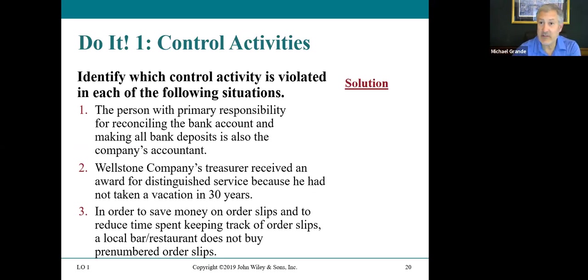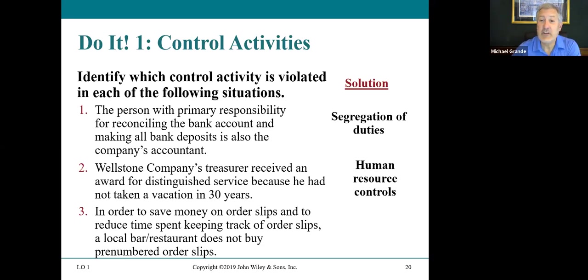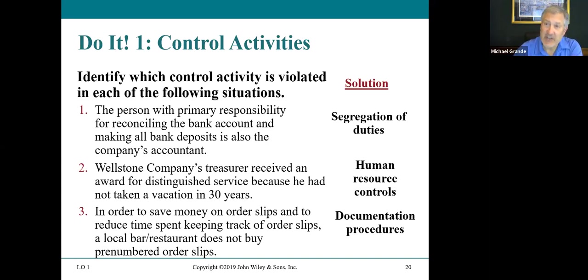Identify which control activity is violated in each situation. First, the person who reconciles a bank account and makes all bank deposits is also the company's accountant — this violates segregation of duties; handling cash should be separate from reconciling. Second, Wellstone Company's treasurer received an award for not taking a vacation in 30 years — this violates human resource controls. Third, a bar-restaurant doesn't buy pre-numbered order slips to save money — this violates documentation procedures. Pre-numbered documents let us account for every transaction, including voided ones.